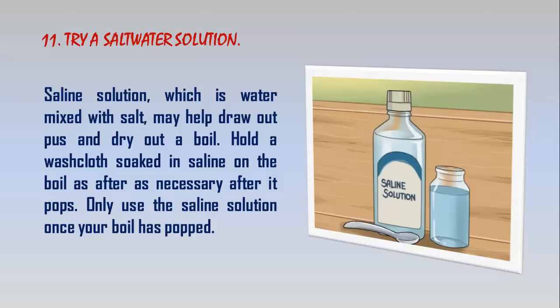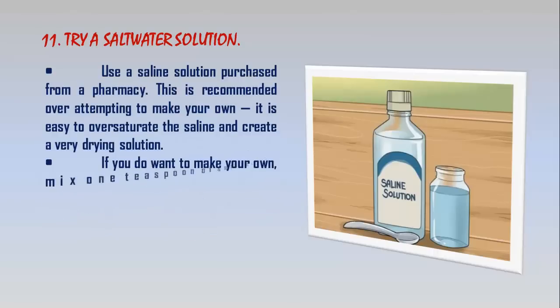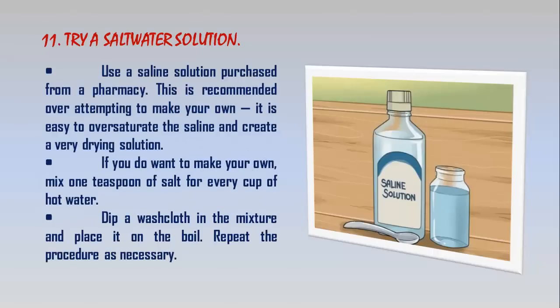Step 11 - Try a salt water solution. Saline solution, which is water mixed with salt, may help draw out pus and dry out the boil. Hold a washcloth soaked in saline on the boil as often as necessary after it pops. Only use the saline solution once your boil has popped. Use a saline solution purchased from a pharmacy, as it is easy to oversaturate the saline and create a very drying solution. If you do want to make your own, mix 1 teaspoon of salt for every cup of hot water, dip a washcloth in the mixture, and place it on the boil. Repeat the procedure as necessary.